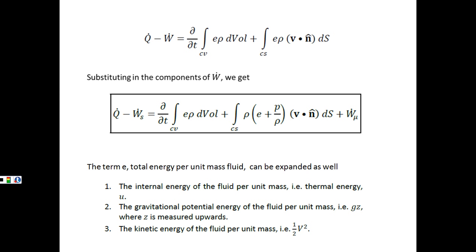If we substitute in the definitions of pressure work, shaft work, and viscous work, we can rewrite this as Q-dot minus W-shaft-dot equals d/dt over the CV of E rho dV, plus the surface integral of rho times (e plus P over rho) times V dot n dS, plus the viscous work term. We've broken up dW/dt into something on the left-hand side, something on the right-hand side, and something within the control surface equation. Pressure is going to be acting on the surface because it's applied normal to the control volume.